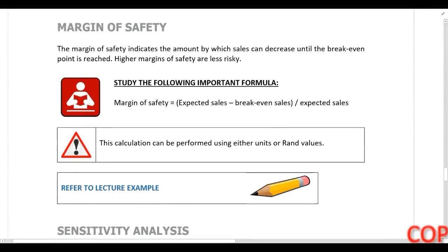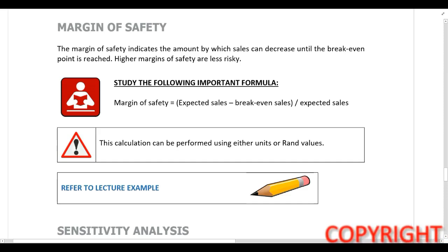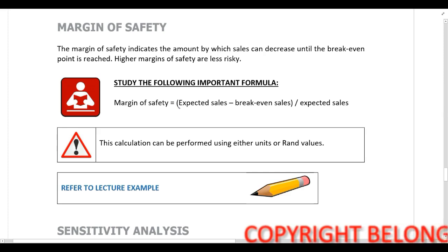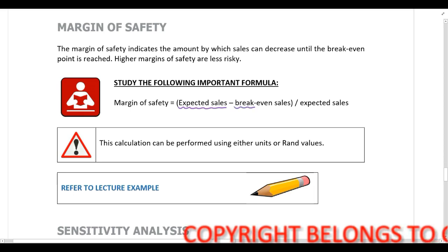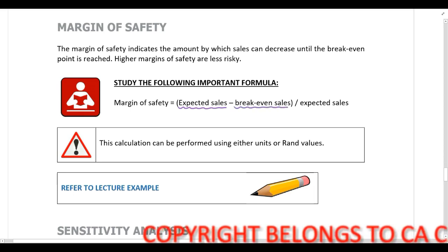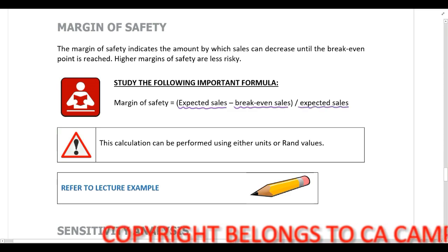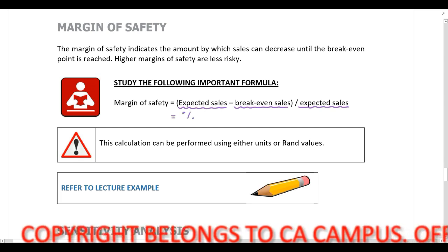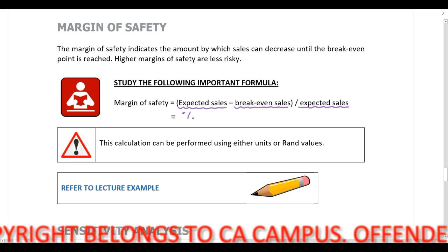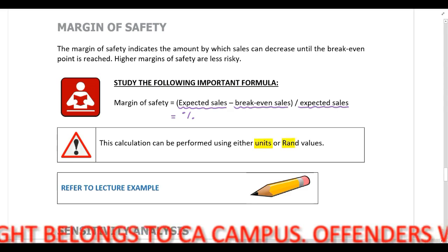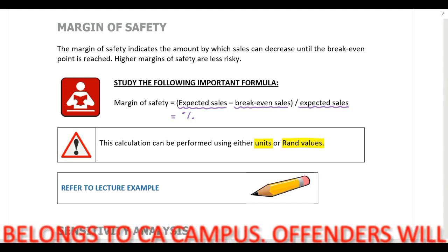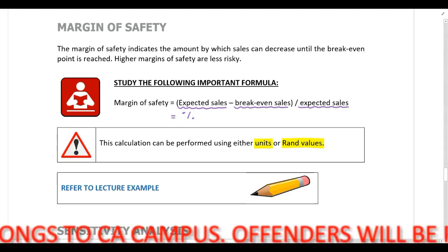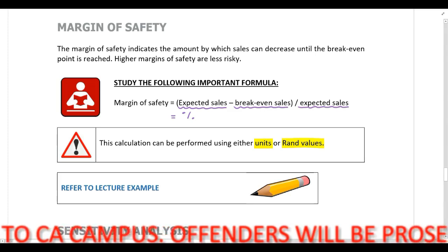The next calculation we need to look at is the margin of safety. Let's first go through the formula. You calculate the margin of safety by taking expected sales, deducting break-even sales, and then dividing by expected sales. This gives you an answer as a percentage. You can perform this calculation using units or rand values, and regardless of which you use, you'll get exactly the same answer.